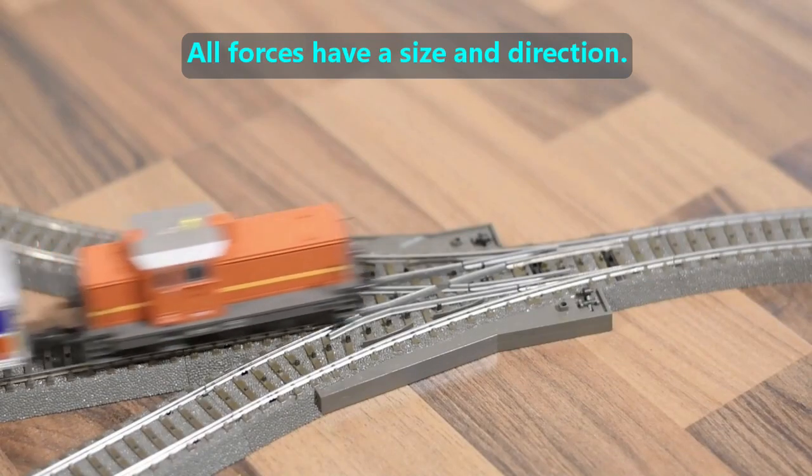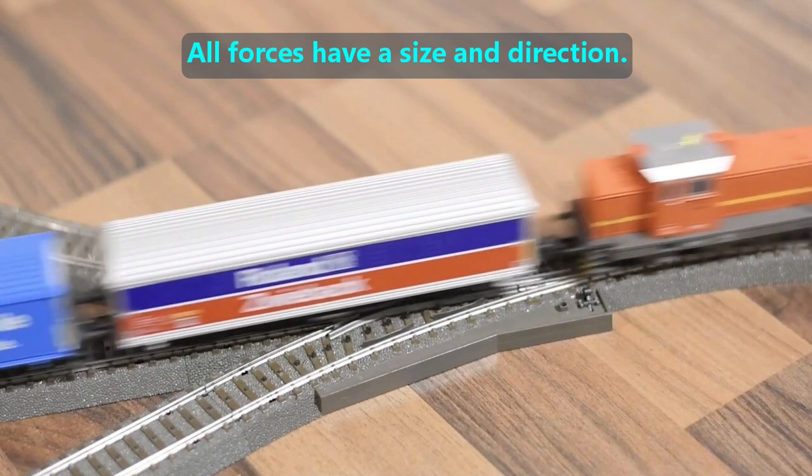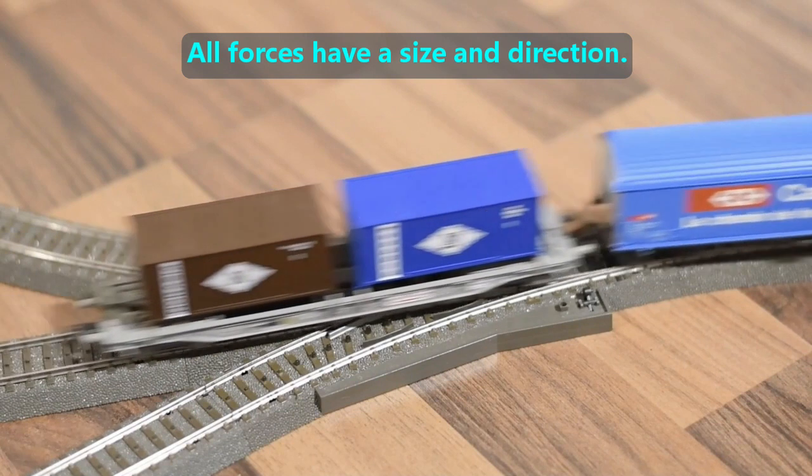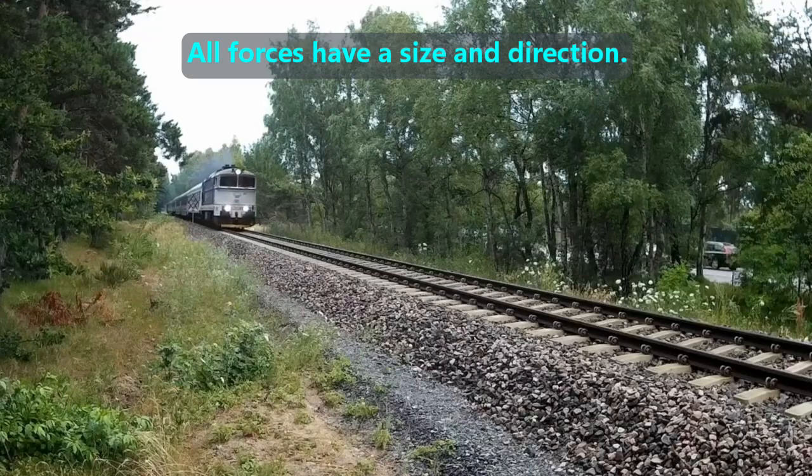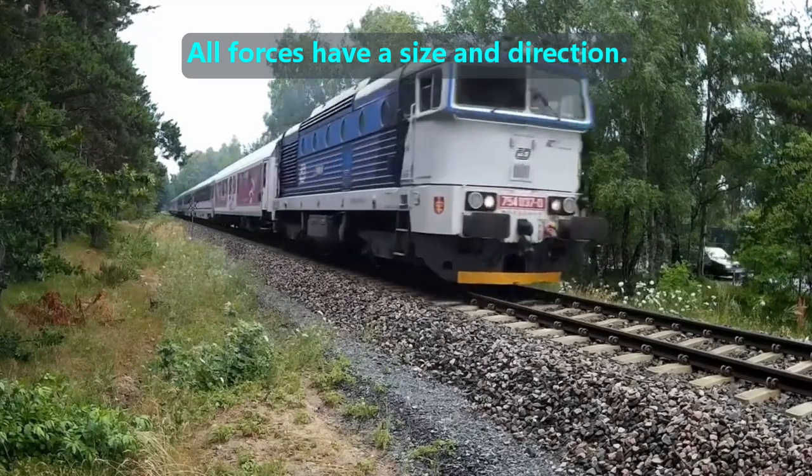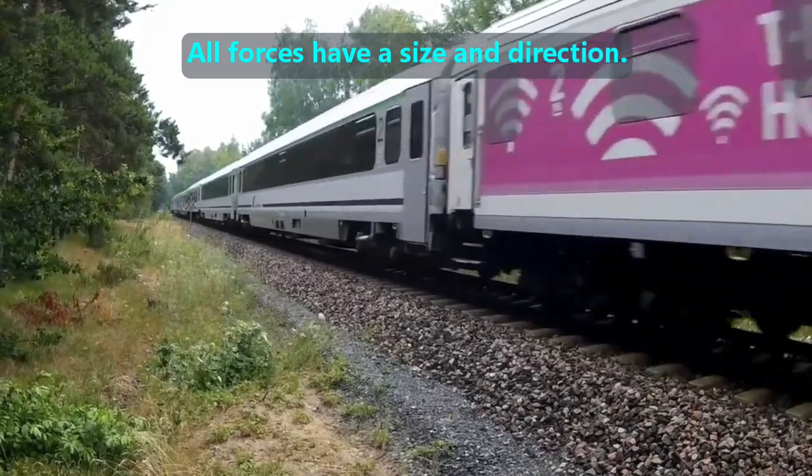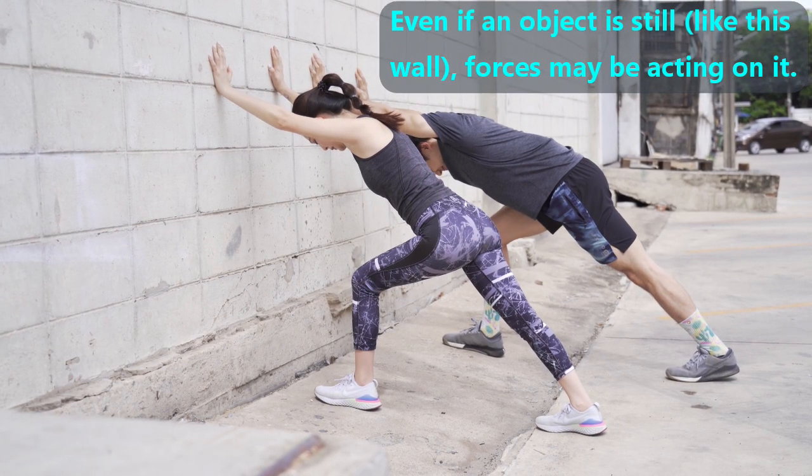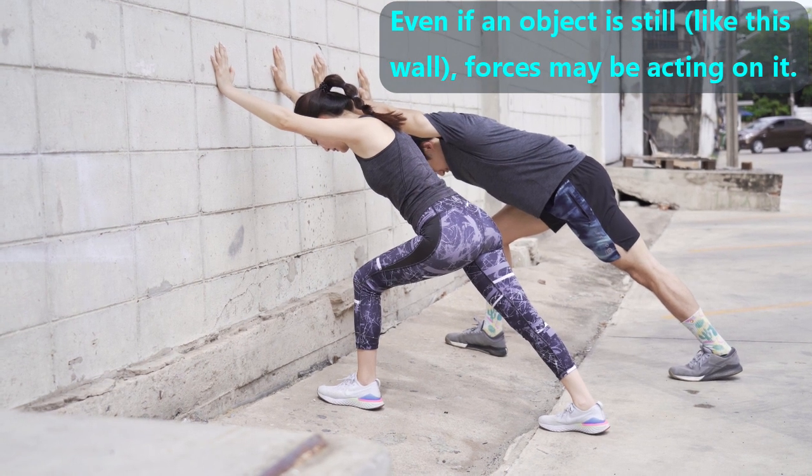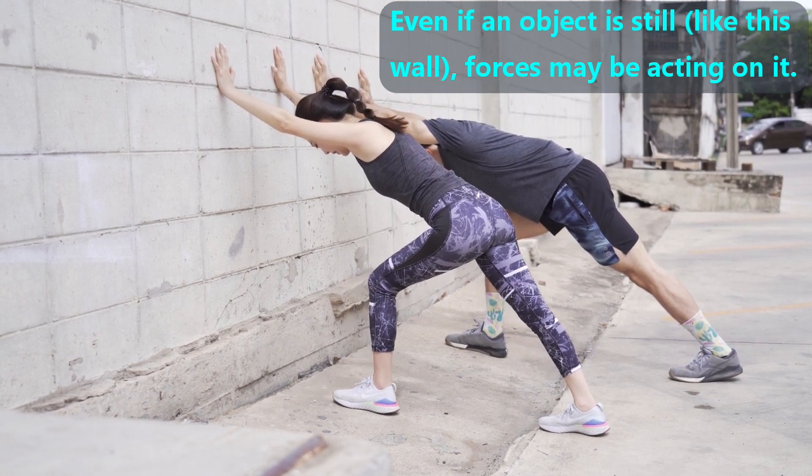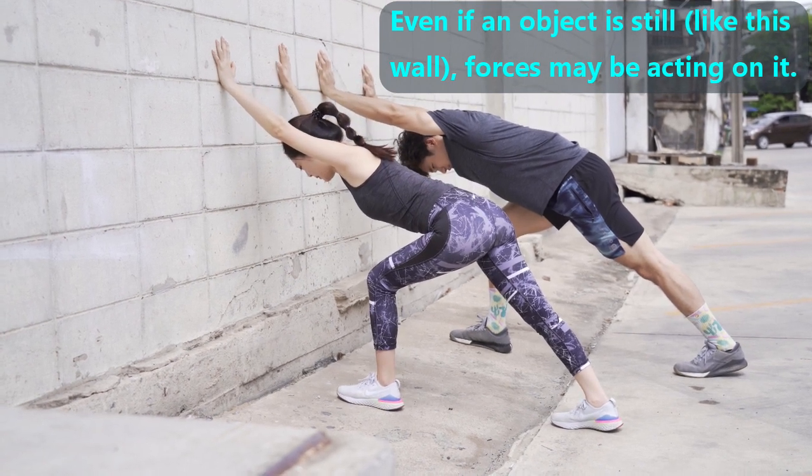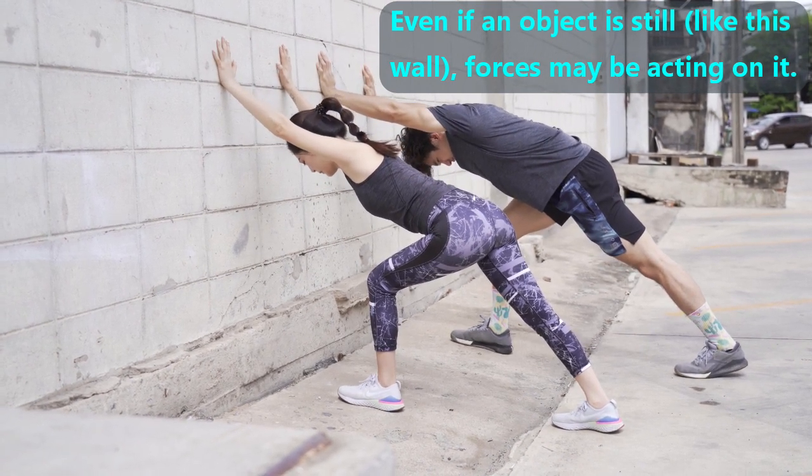All forces, including the seven types we reviewed, have a size and a direction. This toy train has a small amount of force, and it is moving east. This big train has a large force, and it's going south. Sometimes, the load is too heavy for the force to move, but there can still be a force applied to it. These athletes are stretching their legs before they go for a run. Even though the wall is not moving, it is still getting a contact by pushing force from the runners.